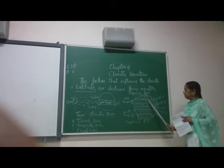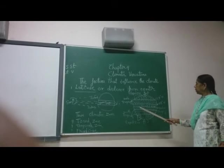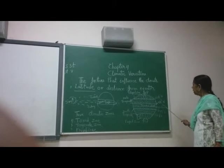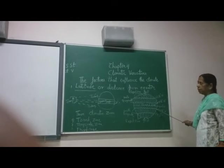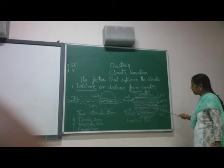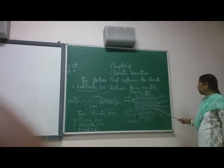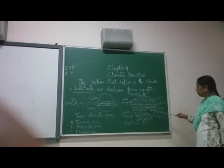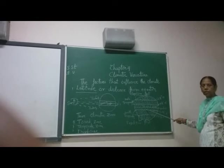Now look at this figure of the torrid zone. Between 23 and a half degrees north and 23 and a half degrees south — that is, the Tropic of Cancer and the Tropic of Capricorn — this area is called the torrid zone. Because here the sun's rays fall directly, it is the hot zone. This area receives up to 40 degrees of heat, and it has the highest temperatures. The torrid zone is known as the hot zone.